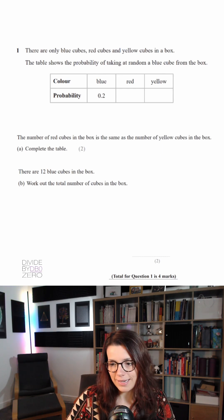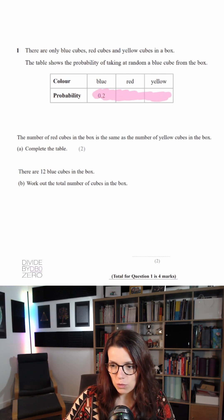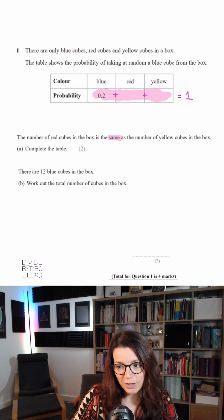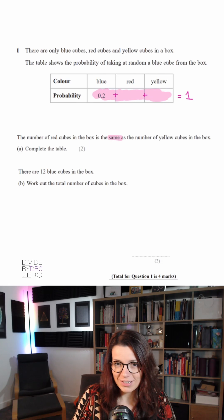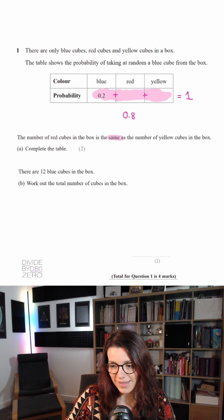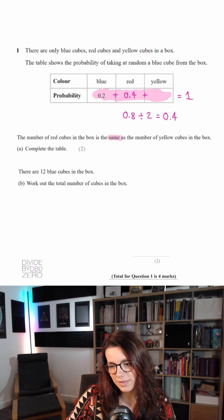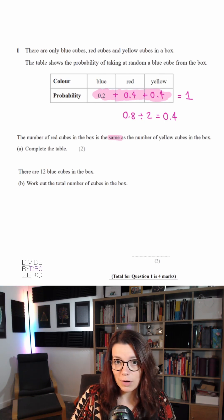Part A, complete the table. Now we know that in any situation all probabilities must add up to 1. The fact that the number of red cubes is the same as the number of yellow cubes means that those two probabilities are going to be the same as each other. We have 0.8 to split evenly across two probabilities, so that's a probability of 0.4 each, and that's part A.